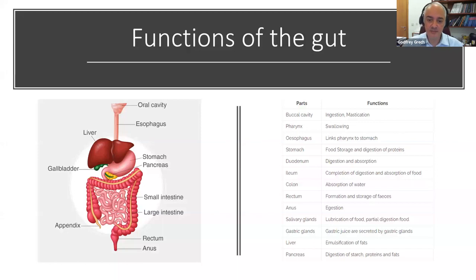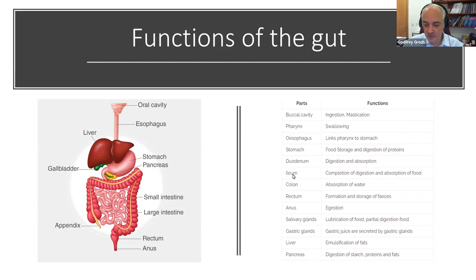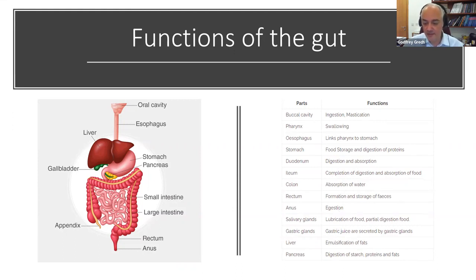Looking at the functions of the gut by region: the buccal cavity handles ingestion and mastication; the esophagus links to the stomach, which stores food and uses acidic gastric enzymes to digest proteins; the small intestine — duodenum, jejunum, ileum — is important for digestion and absorption; the colon handles water absorption; the rectum handles formation and storage of feces; and the anus handles expulsion. Throughout, various glands provide digestive enzymes — salivary glands, gastric glands, the liver producing bile important for emulsification of fats, and the pancreas also producing digestive enzymes.